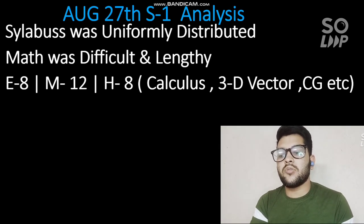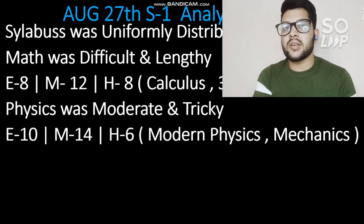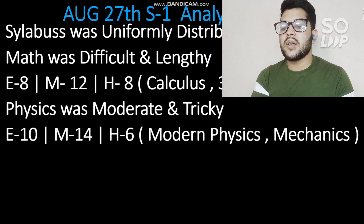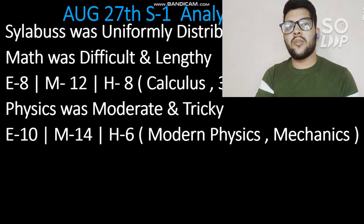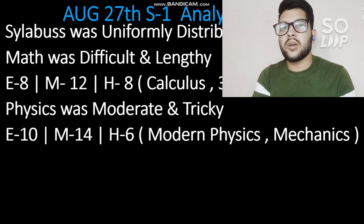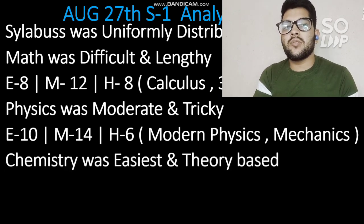Permutation and combination were also featured. Physics was moderate and tricky as reported by students who gave the exam. Easy questions were 10, moderate 14, and hard 6. Modern physics again had more questions, similar to the previous shift and previous attempt. Modern physics is very important - it gives 5 to 6 questions per shift. Mechanics, current electricity, thermodynamics, EM waves, and semiconductors also had questions.